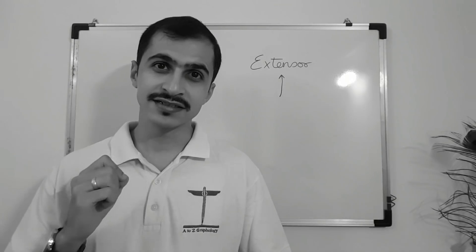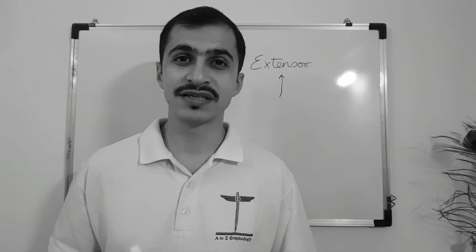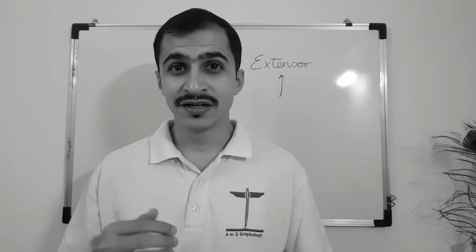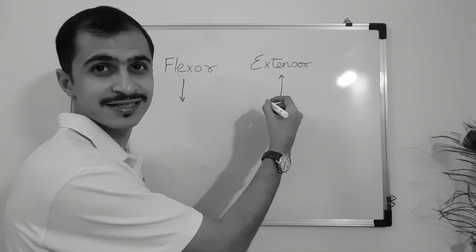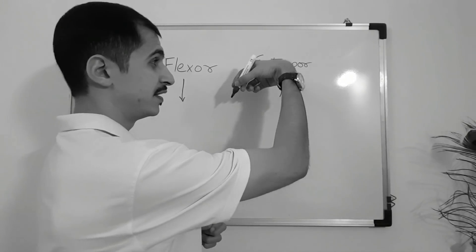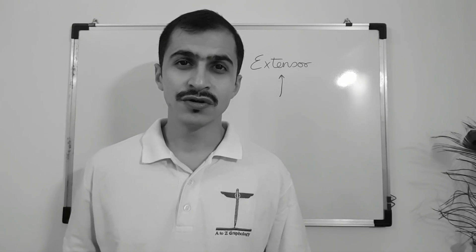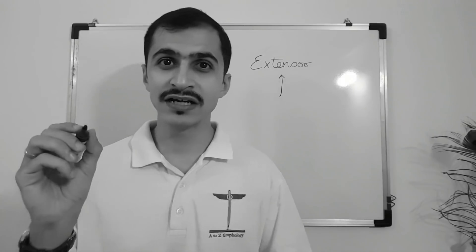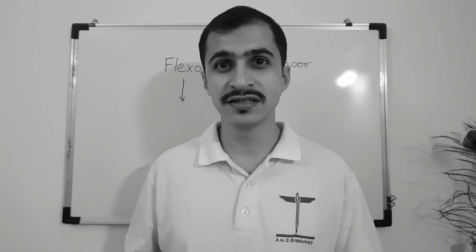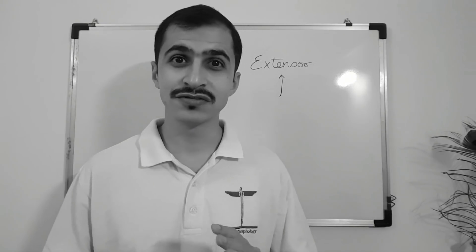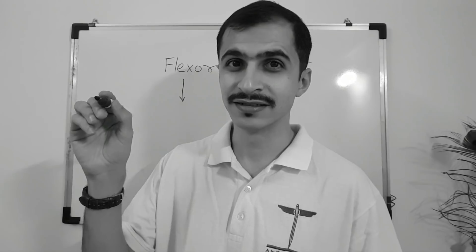On a paper, when I write a flexor, it represents something coming towards me. When I write an extensor, it represents something going away from me. Now, some people write in a standard way where the hand position is like this, and some people write the other way around. This video is for people who write with the standard posture. If you write with the other posture, please connect with me personally so you don't get confused.